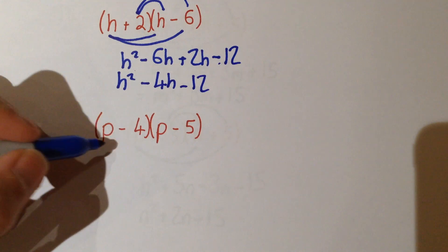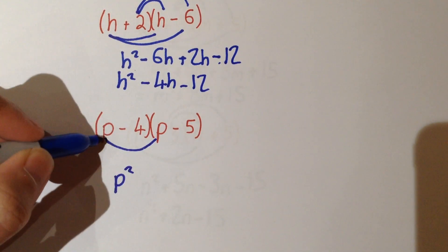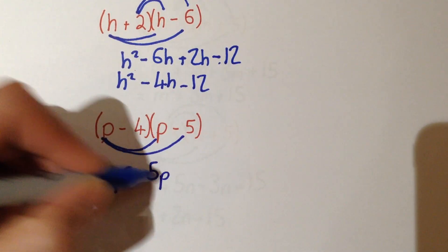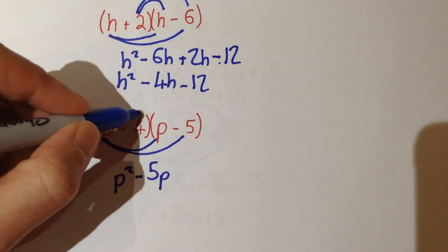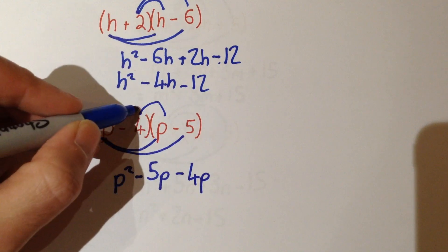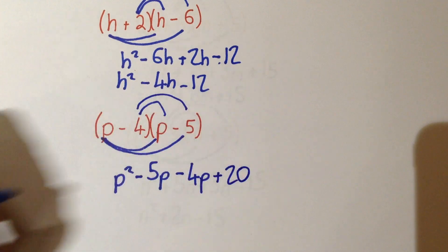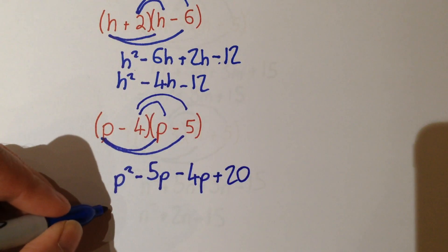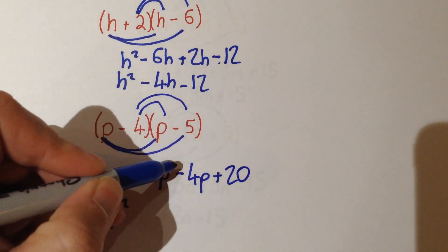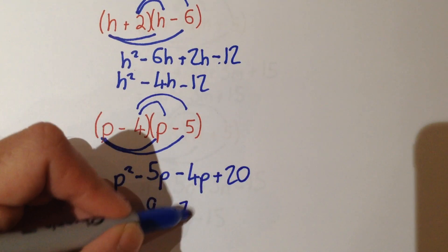Next example. We multiply p by p to give us p squared. p times negative 5 gives minus 5p, negative 4 times p gives us minus 4p, and negative 4 times negative 5 gives us plus 20. Collecting together this gives us p squared — minus 5 take away another 4 gives us minus 9p — and then plus 20 at the end.